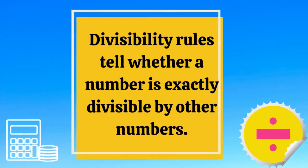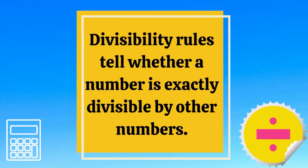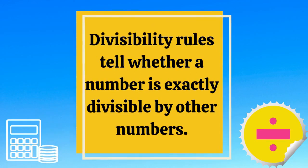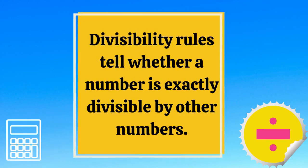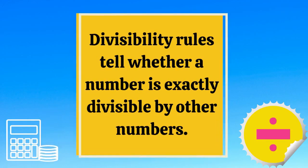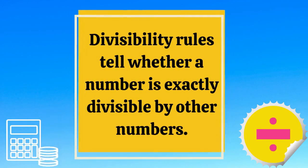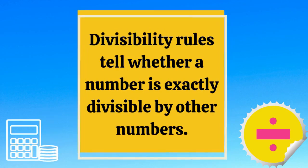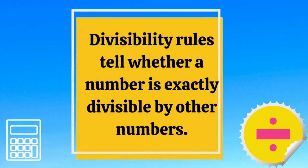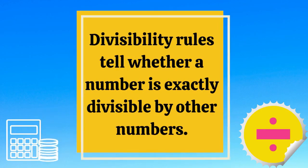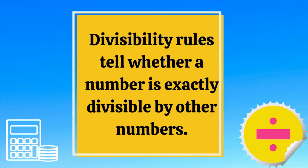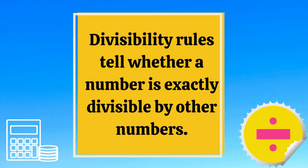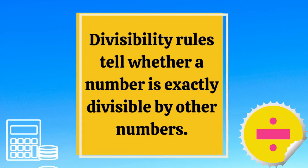Divisibility Rules tell whether a number is exactly divisible by other numbers. This rule is a shortcut way to decide whether a number is exactly divisible by another number without doing division computation.